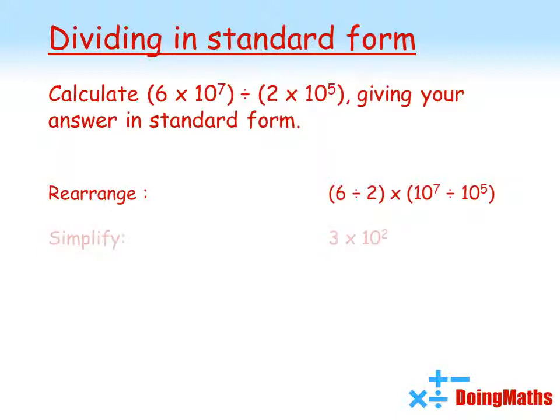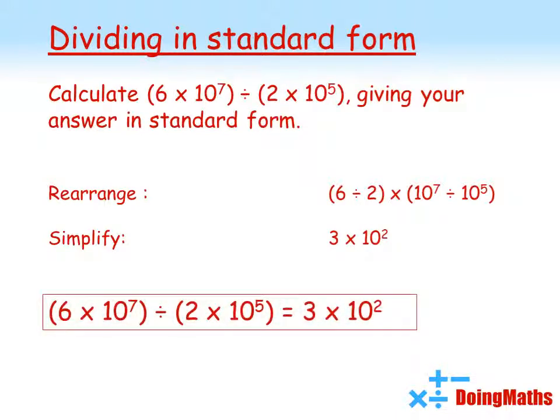So 6 divided by 2 is 3. 10 to the 7 divided by 10 to the 5 — when we're dividing we take away the second power, so that gives us 10 squared. Now that's already in standard form because 3 is between 1 and 10. So that's our answer.